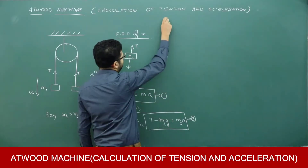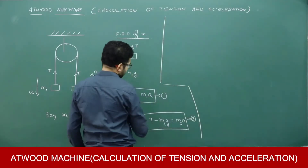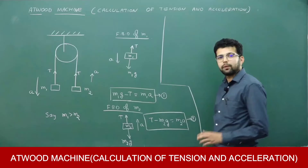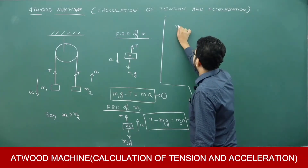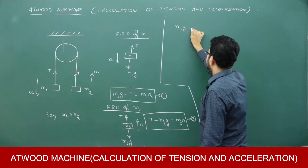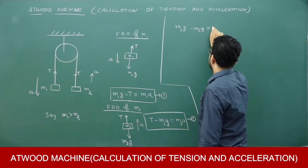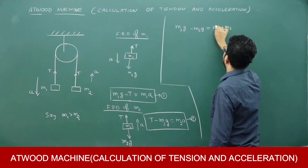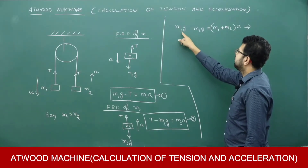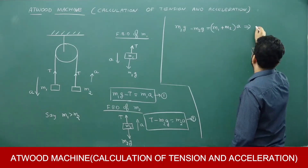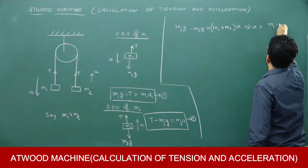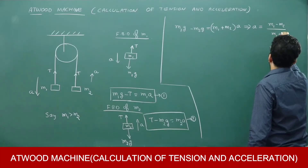Using these two equations I can derive the equation for acceleration and tension. In equation 1 there is −T and in equation 2 there is +T, so let me add them. The T terms cancel, giving: M1·G − M2·G = (M1 + M2)·A. Since G is common, acceleration A = (M1 − M2) / (M1 + M2) × G.